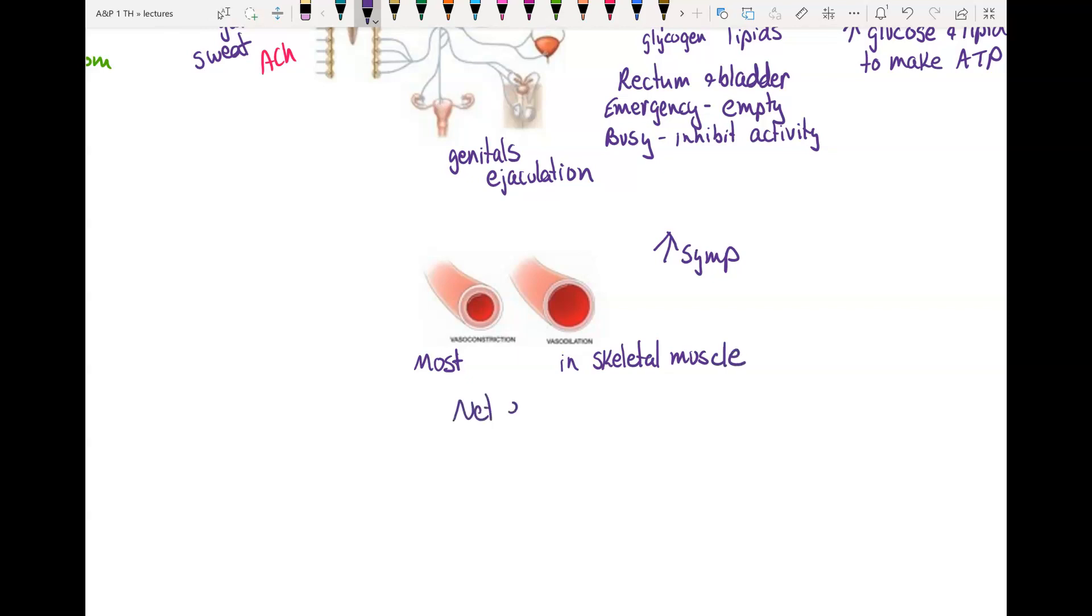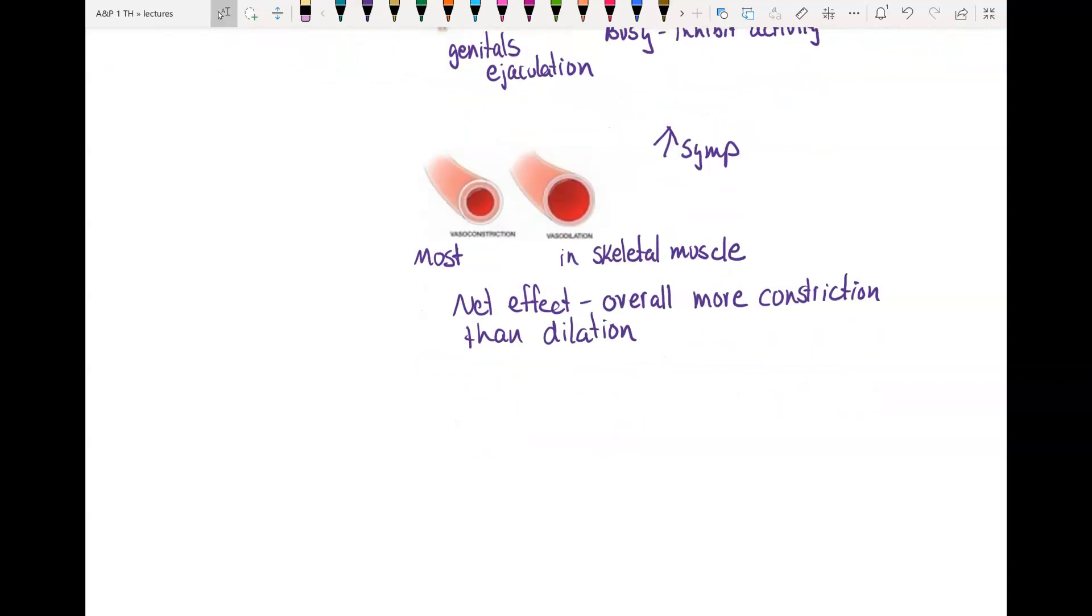So if you look at the net effect, you get overall more constriction than dilation. So there's more blood vessels everywhere else in your body than in just your skeletal muscles. This comes important in blood pressure. With blood pressure, constriction raises blood pressure. So since the overall effect of sympathetic is constriction, sympathetic raises blood pressure. Even though some of the vessels are dilating, more are constricting, so you have a net effect of constriction.